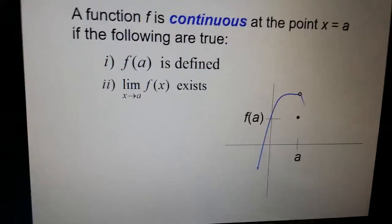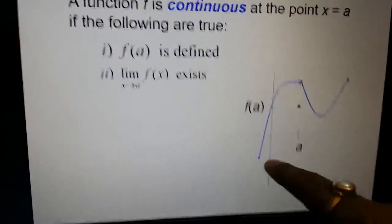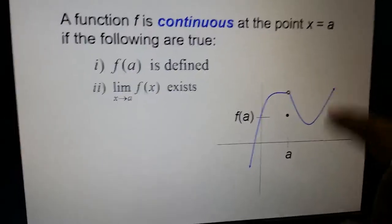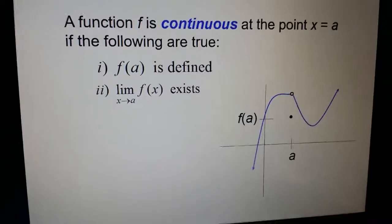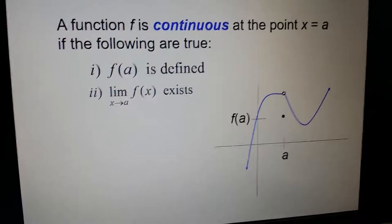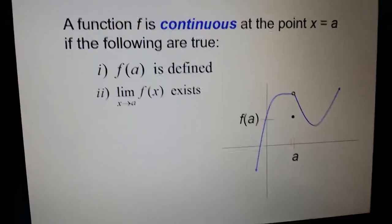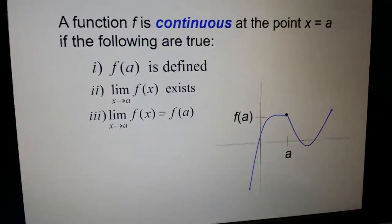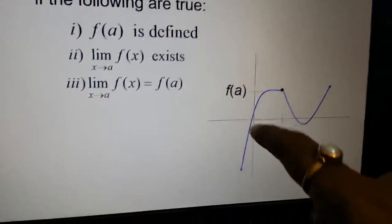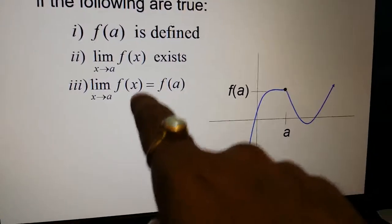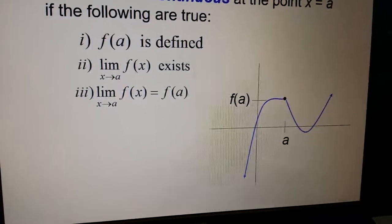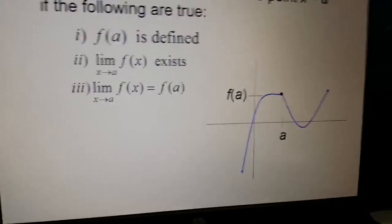The curve starts and goes through continuously at the point a. So at x equals a, the function f is continuous when f(a) is defined, the limit as x tends to a of f(x) exists, and the limit as x tends to a of f(x) equals f(a) — meaning when we put the value a into f(x), we get the same value as the limit.